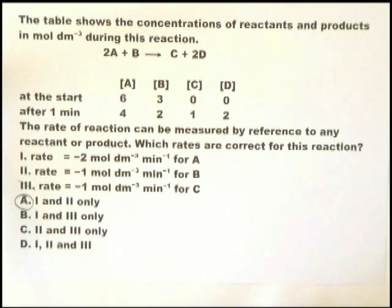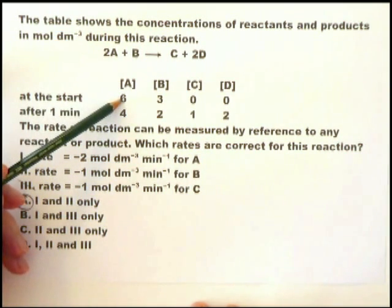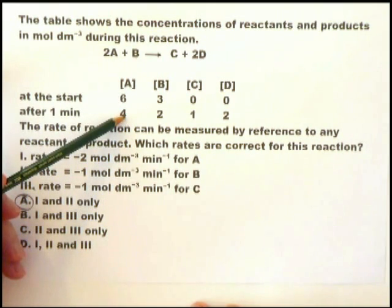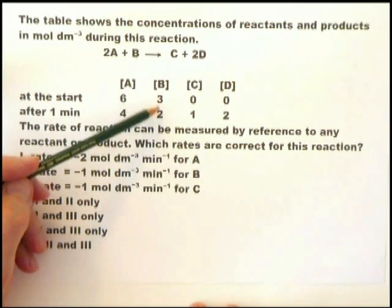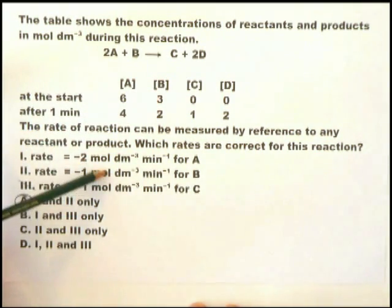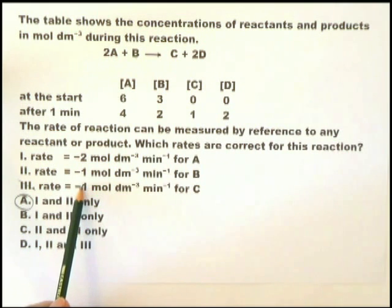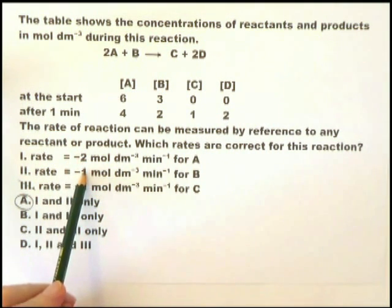However, let us look at the rest of the numbers, just to confirm that 1 and 2 are correct. At the start, there are 6 moles per decimetre cubed of A, and after 1 minute, there's 4. There's 2 moles have disappeared in 1 minute. And there, going from 3 to 2, 1 mole has disappeared in 1 minute. Therefore, the rate for A is loss of 2 per minute. The rate for B is loss of 1 per minute. Those 2 are correct, and that 1 is wrong. So A is the answer. And it can be done very quickly, as soon as you realise the rate for C must be positive. The rate for products must be positive. The rate for reactants is always negative.